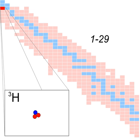Naturally occurring tritium is extremely rare on Earth, where trace amounts are formed by the interaction of the atmosphere with cosmic rays.